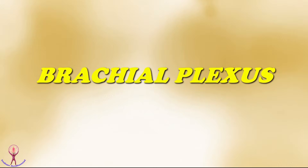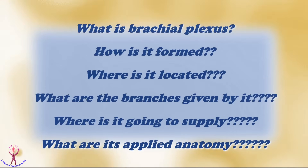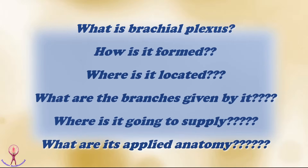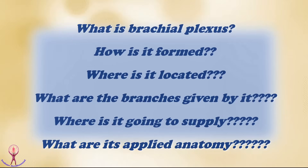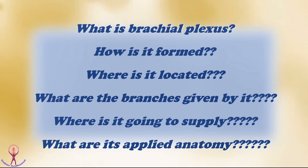Dear Medicos, now I am going to teach you about the important nerve plexus that supplies the upper limb or extremity — the brachial plexus. What is brachial plexus? How is it formed? Where is it located? What are the branches given by it? Where does it supply? And finally, what are its applied anatomy? Be ready to learn the objectives of brachial plexus.